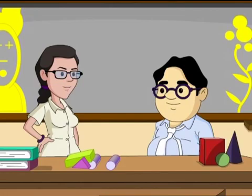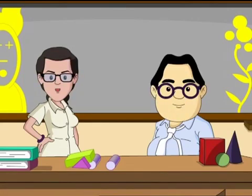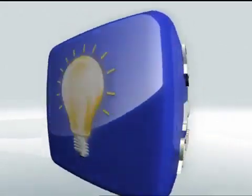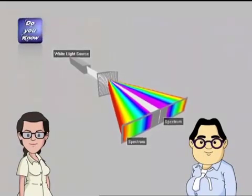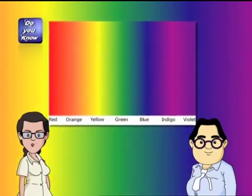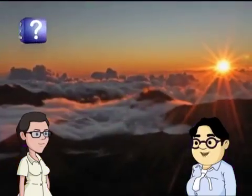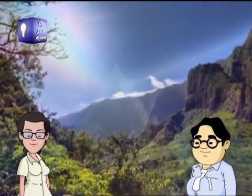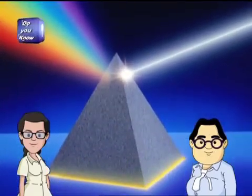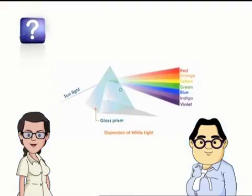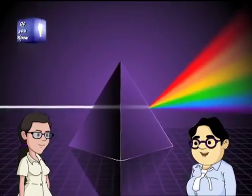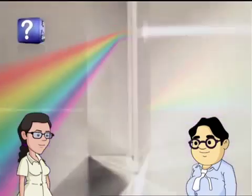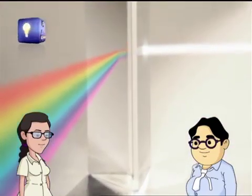I have another very interesting phenomenon to tell you wherein factorization takes place — let's check it out in the 'Do You Know' section. Did you know that sunlight, also called white light, can be split into its constituent colors: red, orange, yellow, green, blue, indigo, and violet? One way is with the help of a prism. When sunlight passes through a prism, it splits into its constituent colors.